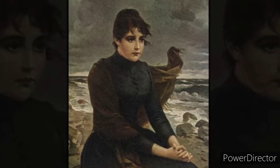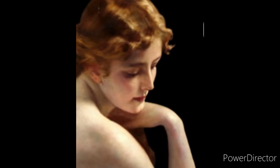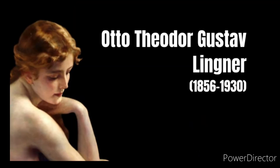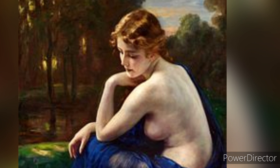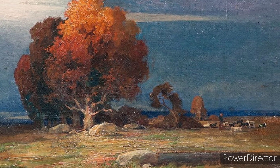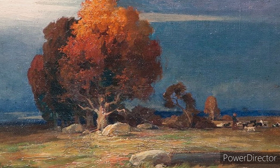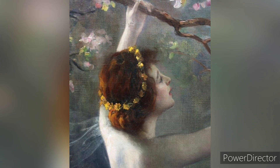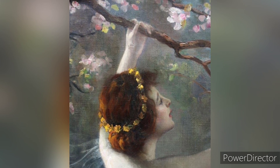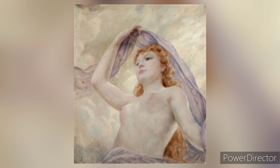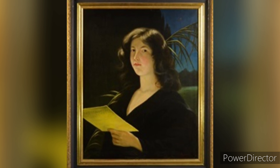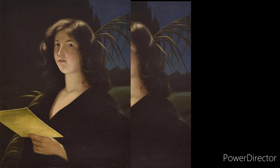Another significant aspect of Ligner's work was his innovative use of light and shadow. Influenced by the dramatic lighting techniques of Baroque painters like Caravaggio, Ligner applied these principles to the screen. Using chiaroscuro to create mood and highlight key elements within a scene, his mastery of light manipulation contributed to the overall atmosphere of his works, often imbuing them with a sense of mystery and tension that captivated audiences.